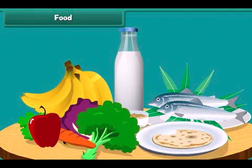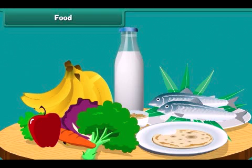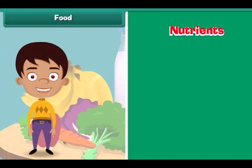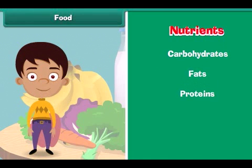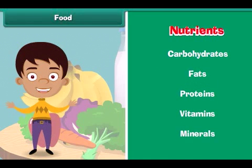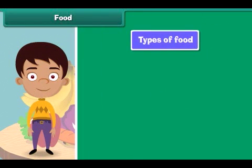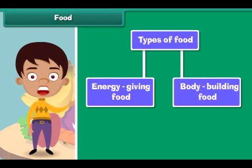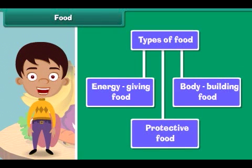We eat a lot of variety of food. Food is made up of nutrients like carbohydrates, fats, proteins, vitamins, and minerals. The human body requires three types of food: energy giving food, body building food, and protective food.